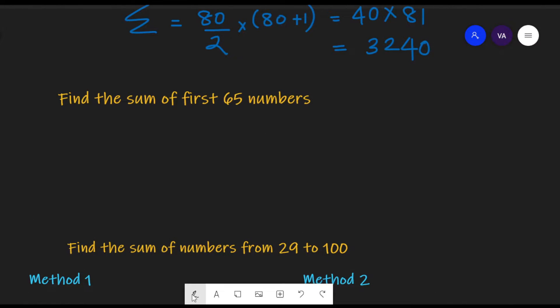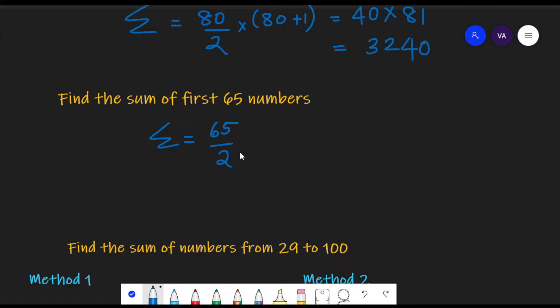Now let us also find for first 65 numbers. So 65 divided by 2, this will be the number of pairs into 65 plus 1 is the sum of each pair. So 65 upon 2 into 66. So finally we have to multiply 65 into 33, which works out to be 2145. I have done this on the calculator, so I could write it so fast.